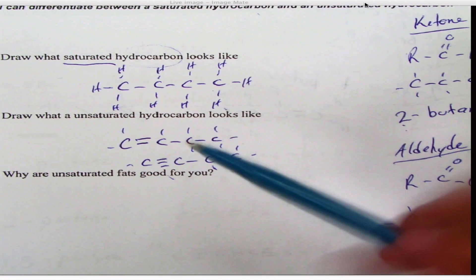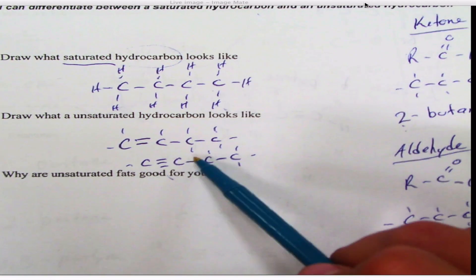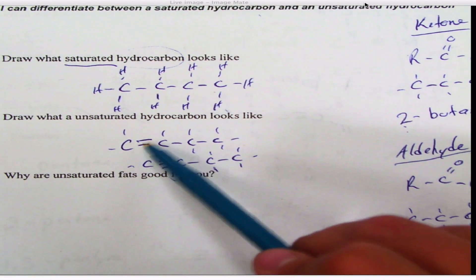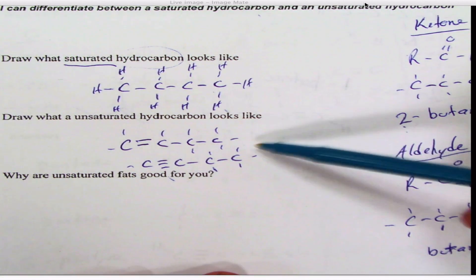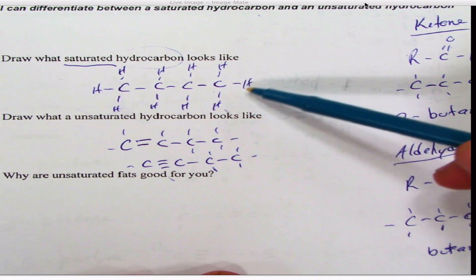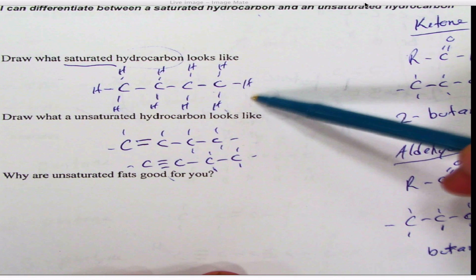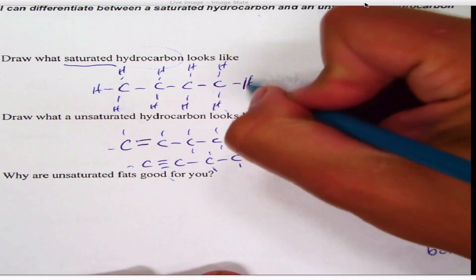And your body can use these a little bit more because you can use these double and triple bonds for other things if it needs to. So why are saturated fats good? Your body can use them better and they don't clot up your arteries and veins as much. Whereas these, if you have a lot of these, you'll have a tendency to have higher cholesterol levels.